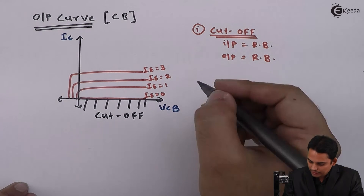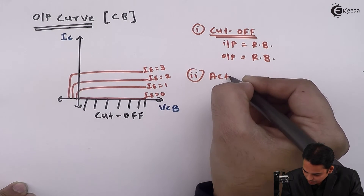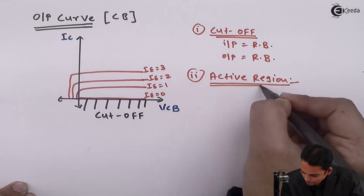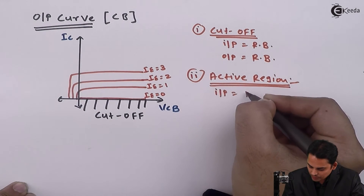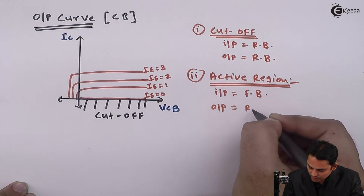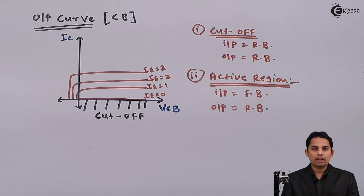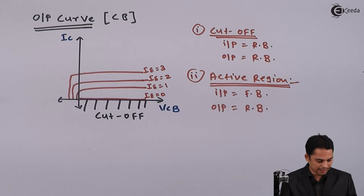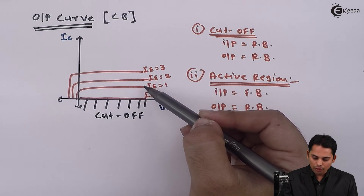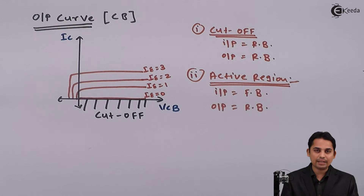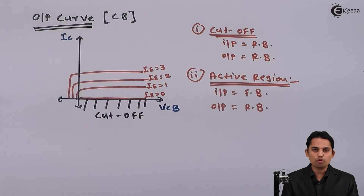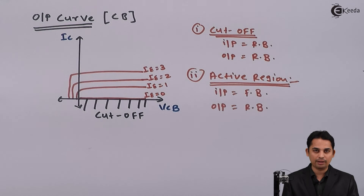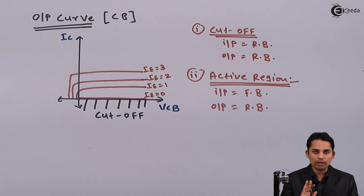The second region is called the active region. For the active region, input is forward biased and output is reverse biased. For different values of input current IE, we will get different curves of output current IC. From the characteristics, it is clear that output current remains constant with respect to output voltage applied, and hence output current is independent of output voltage VCB.